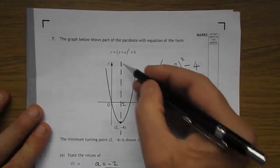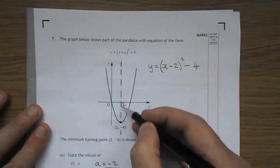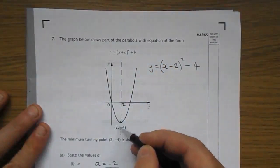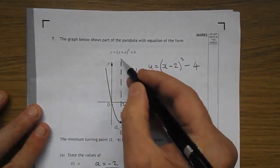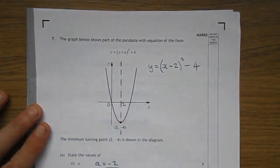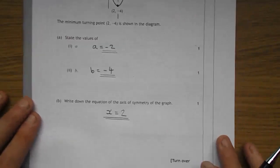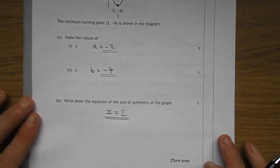You might see I've already drawn in the axis of symmetry. That's the dotted line, the broken line there. Going through the X, number 2. Any vertical line going through X value of 2 is the line X equals 2. And, on to number 8.